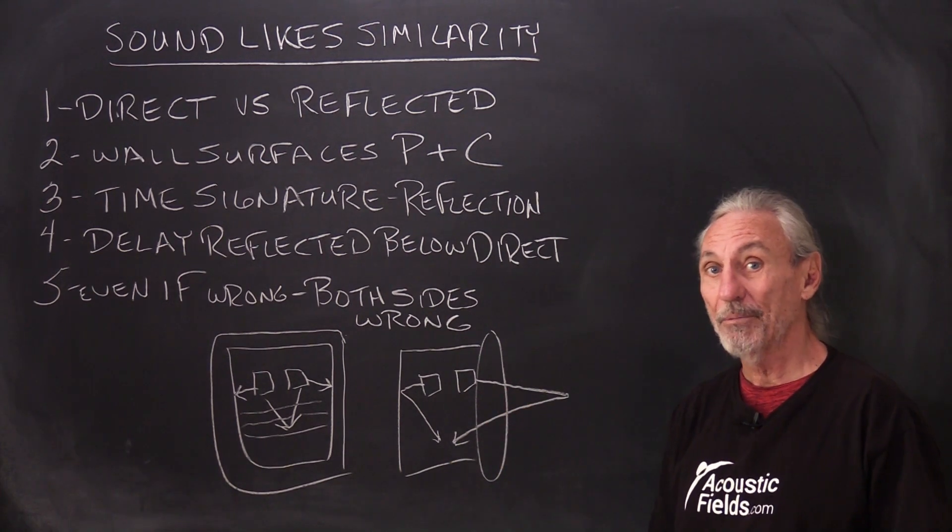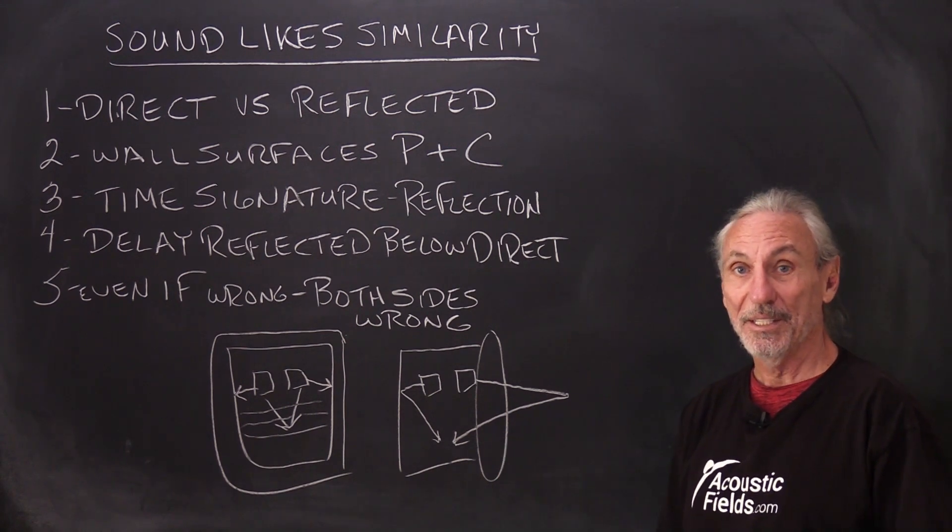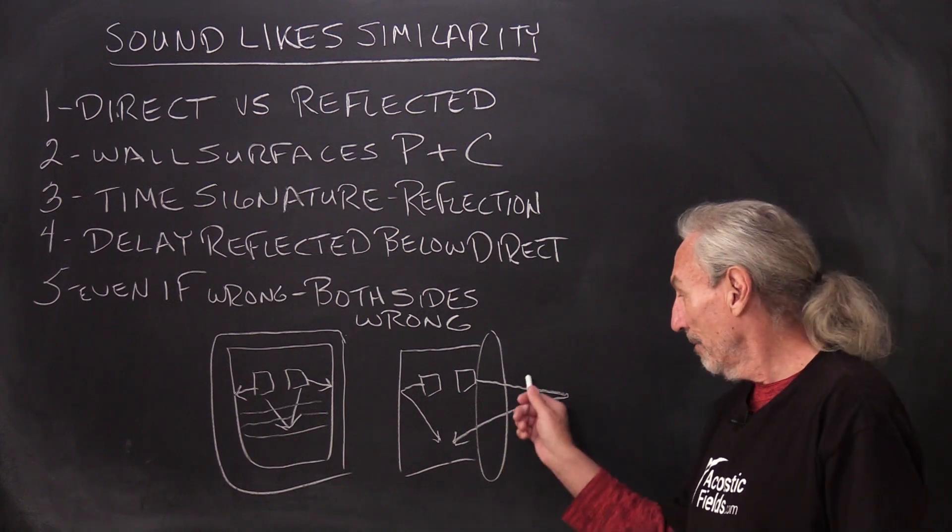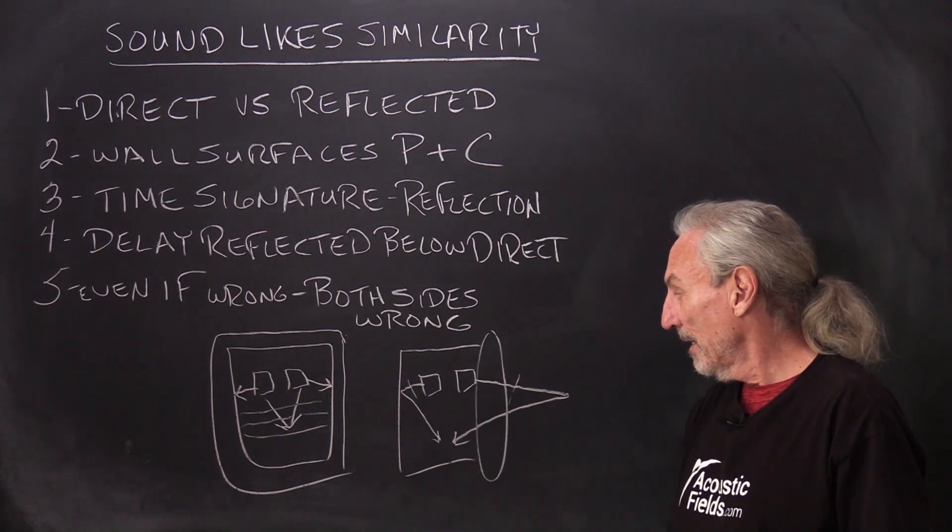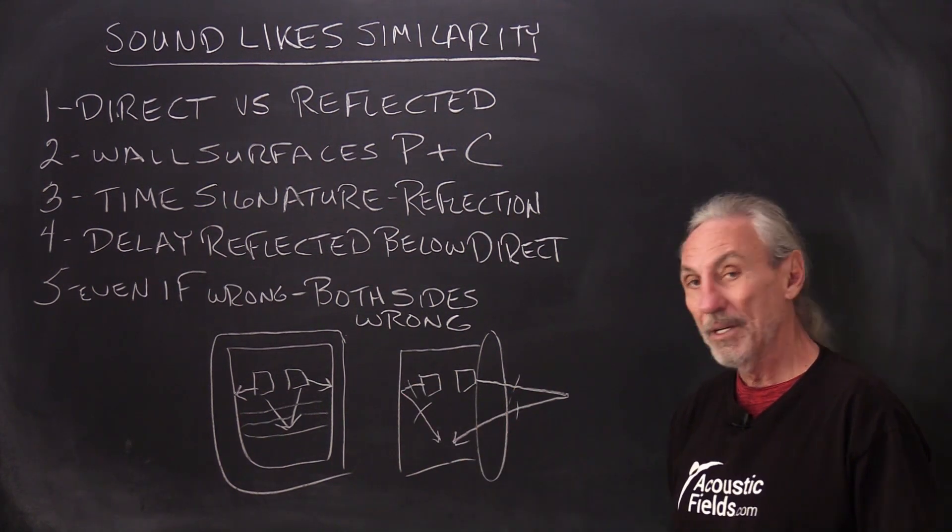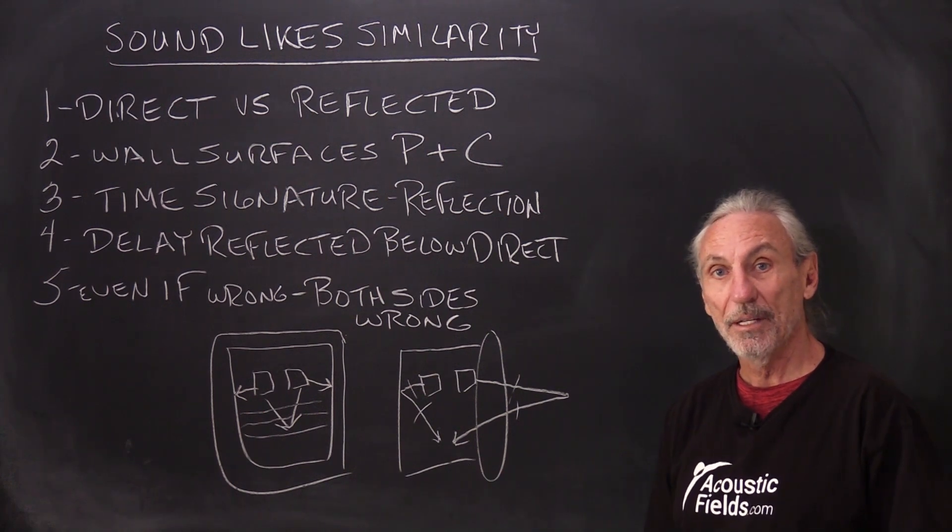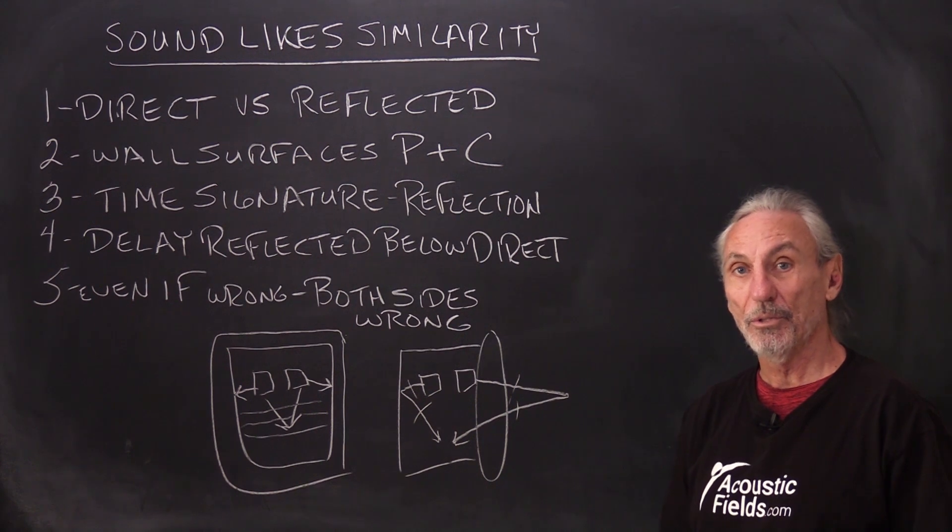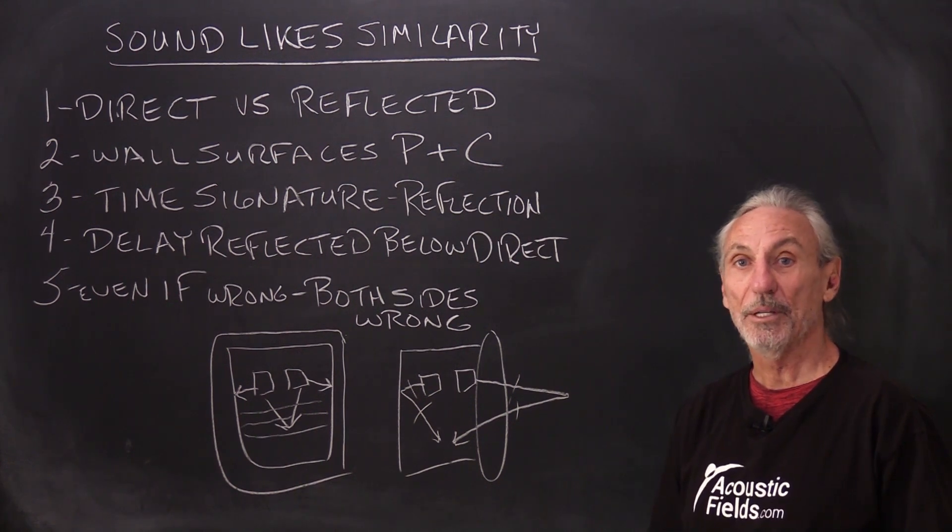Time is money as they say, well in physics distance is money. So when you have unequal distances here and here and here and here, you get phase and that's a form of distortion. And we don't want distortion in our rooms. Our goal is to minimize the distortion.